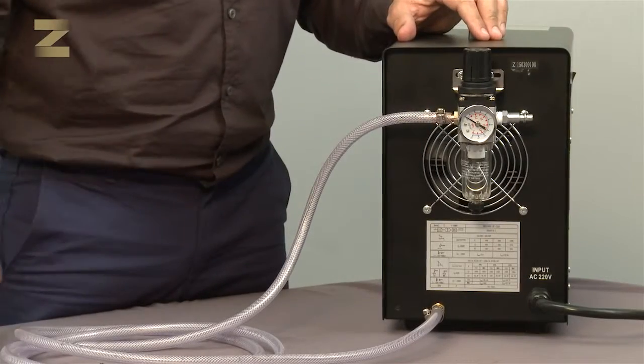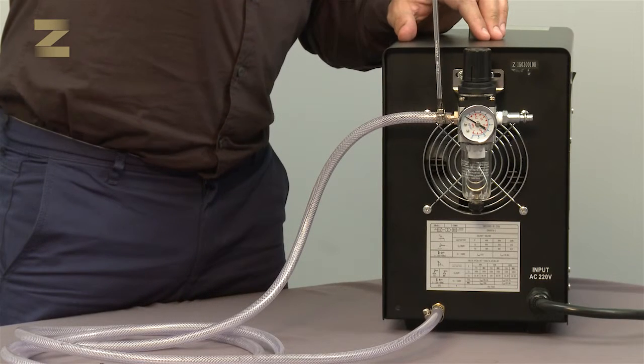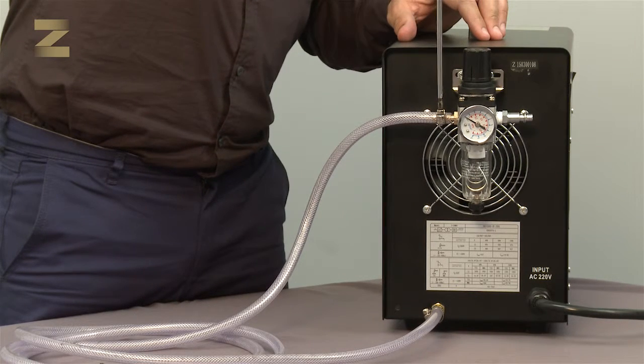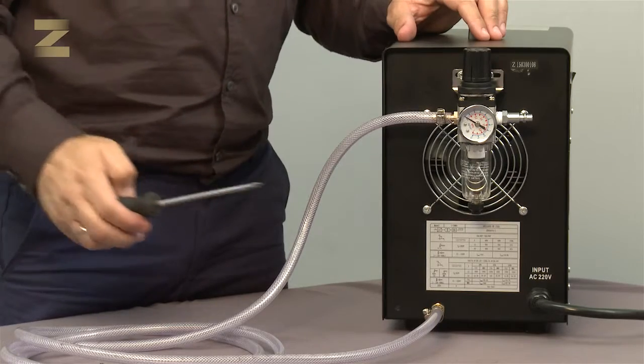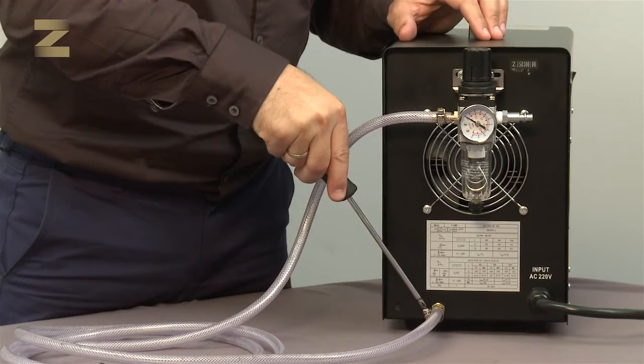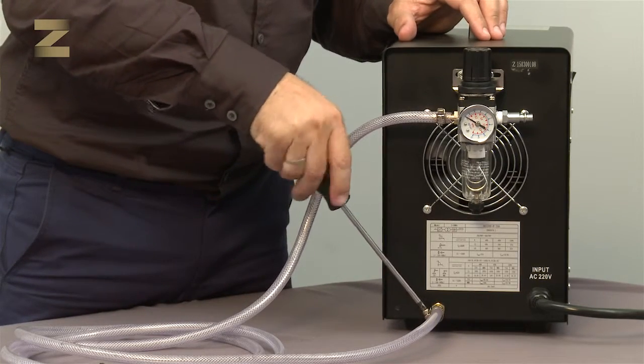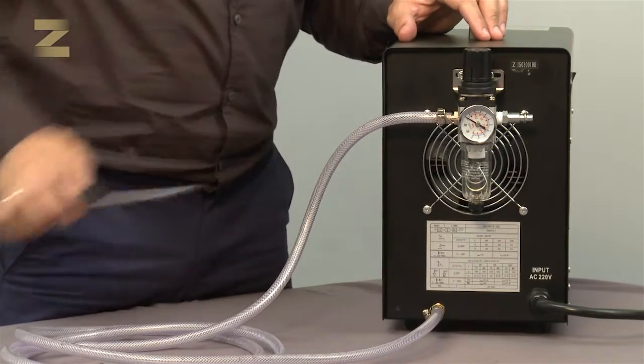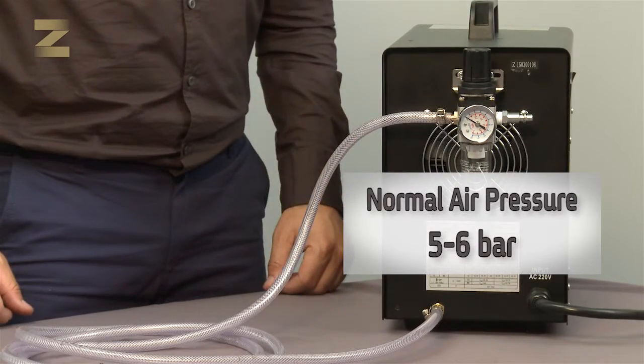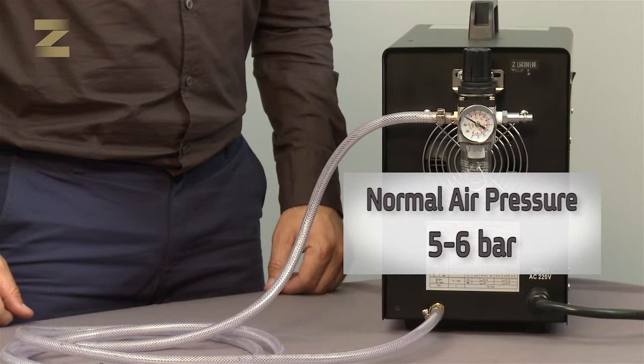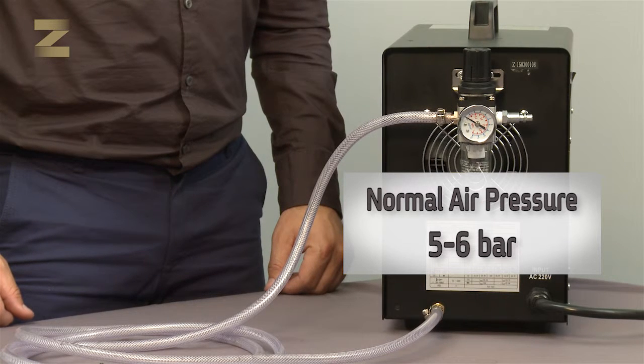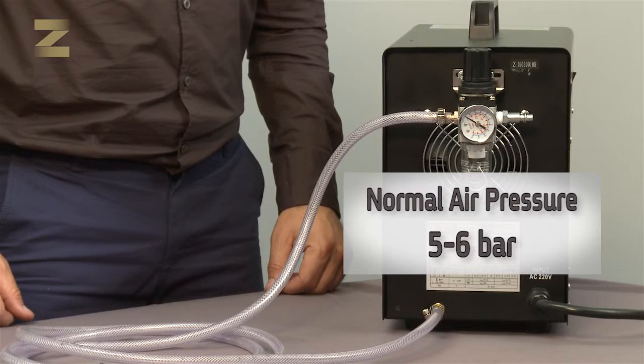Next, connect one end of the air tube to the left regulator inlet and secure with a band. Connect the other end to the air inlet on the machine and secure with a band. A normal air pressure is in the range of 5 to 6 bar. Please note, a too-high or too-low pressure will affect the quality of cutting.